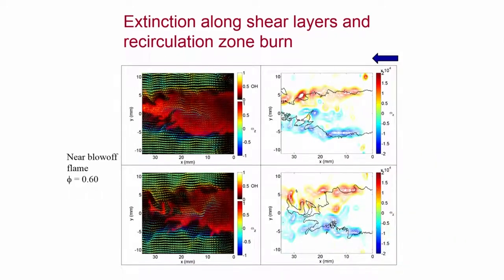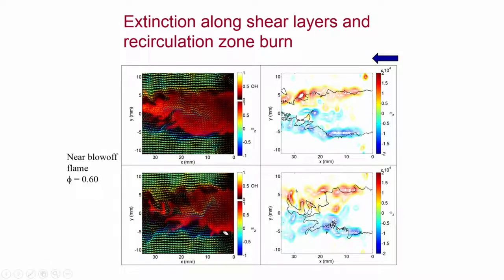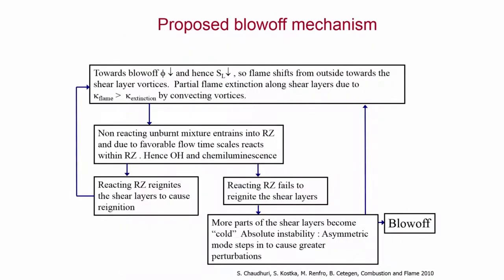Once again we see evidence of recirculation zone burn and extinction along the shear layers. In these very dramatic pictures you see the flame is in a very corrugated shape. These edges are not detected by hand — they are obtained using MATLAB Canny edge detection. You see that there is a lot of extinction even forming. In this slide we can summarize the proposed blow-off mechanism.